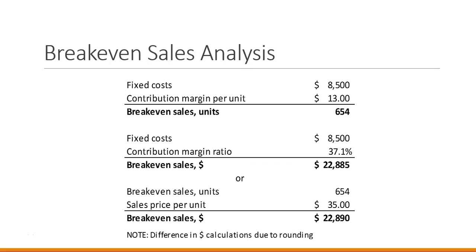Now let's look at our breakeven calculations. First, breakeven sales in units: fixed costs of $8,500 divided by contribution margin per unit of $13 — a number we calculated — gives us breakeven sales of 654 units. Moving on to breakeven sales in dollars: fixed costs of $8,500 divided by the contribution margin ratio of 37.1% (0.371 in decimal form) equals $22,885.